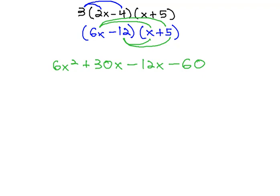Finally, we can get our final answer by combining like terms in the middle, giving us the same answer again, 6x squared plus 18x minus 60.